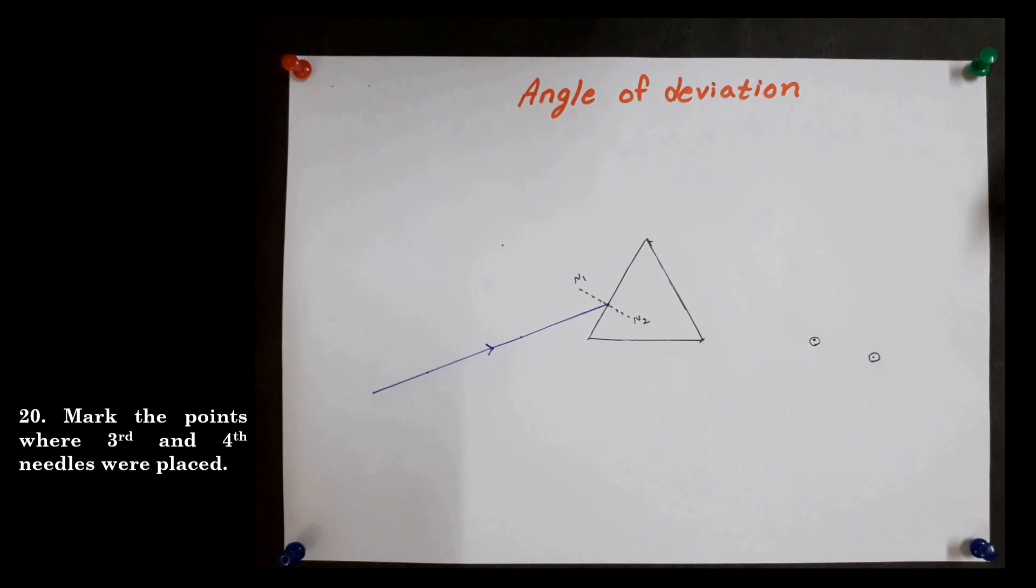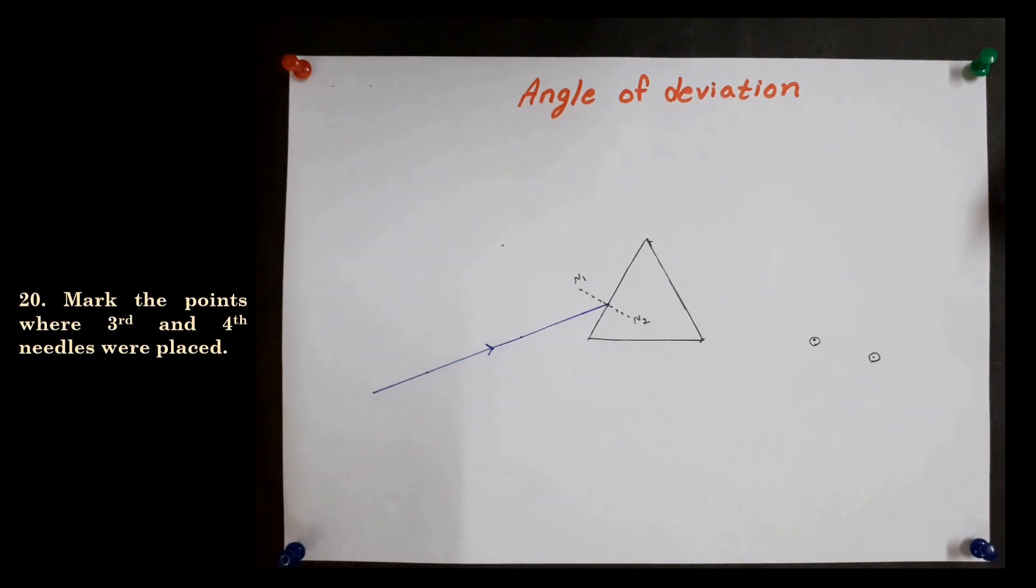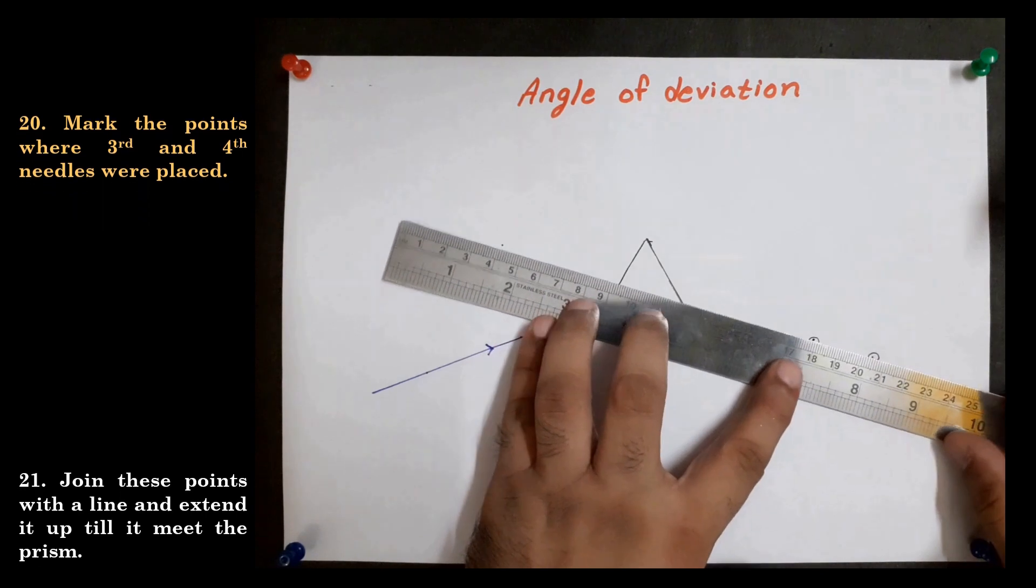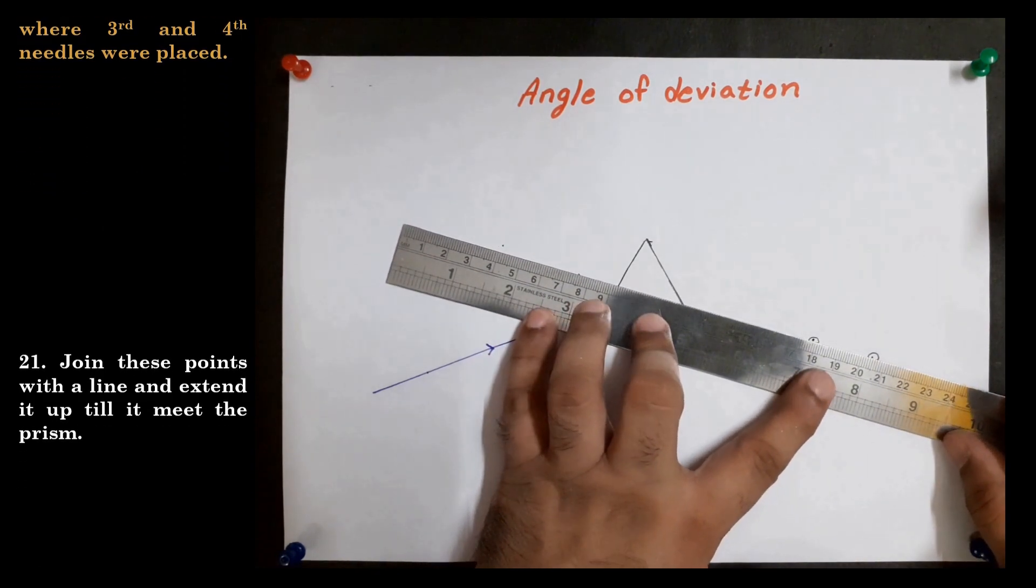Now mark the points where third and fourth needles were placed. Join these points with a line and extend it to the prism. This line is the emergent ray.